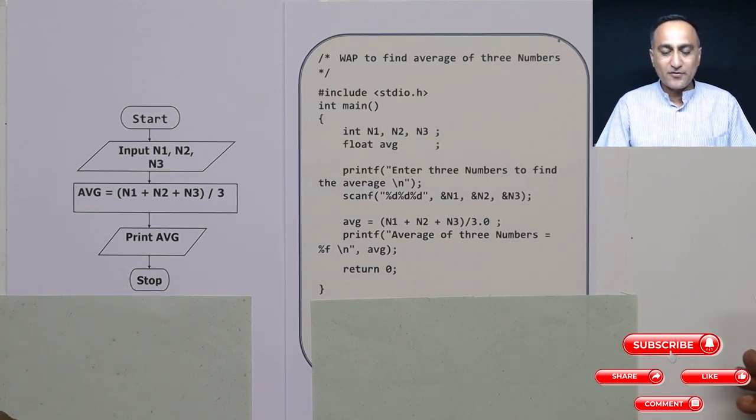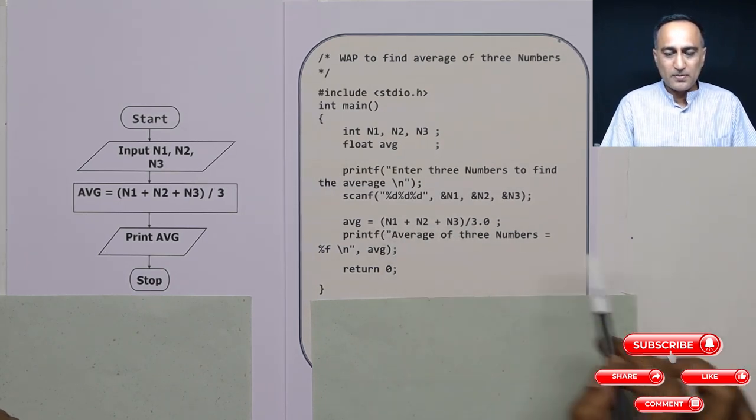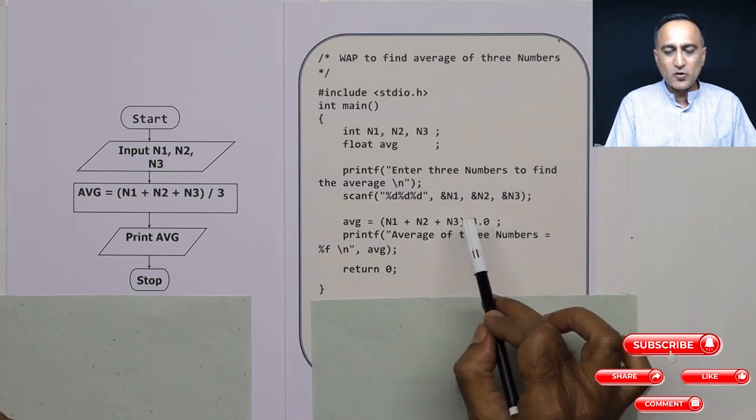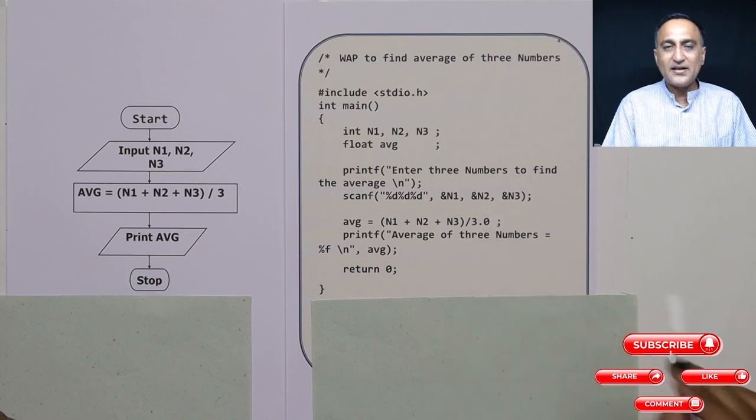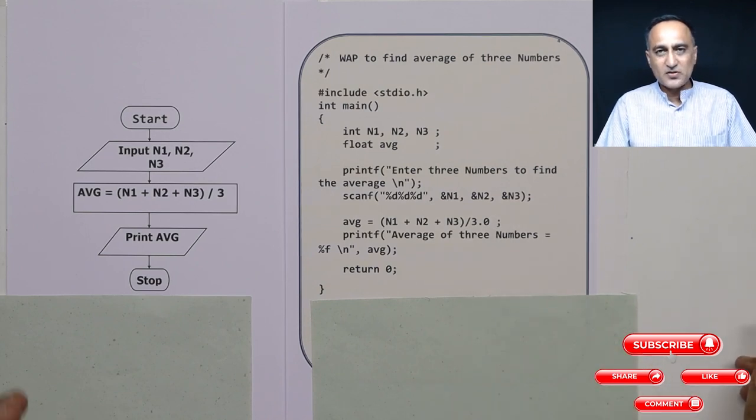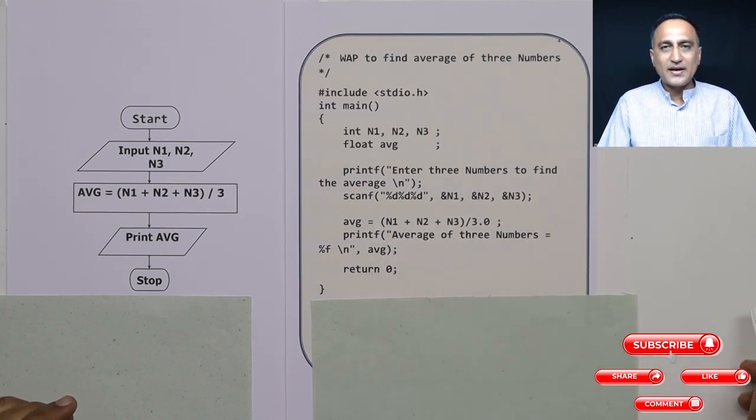So just need to be careful of few things here. If you forget to put the bracket here, you're going to end up in problem. Because it is first going to divide n3 by 3.0, and then the result of n1 plus n2 is going to be added to that division result. So I believe sir has beautifully explained what are the common mistakes you make. You do not have a complete operator takeover like in maths, you have to use parentheses or brackets when required.